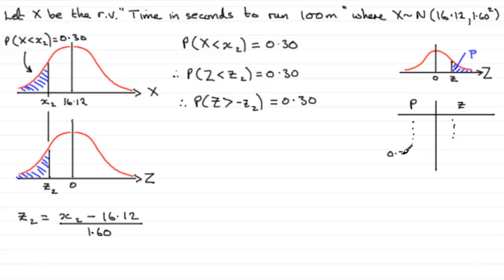You'll in fact see 0.3000 and against that you'll have 0.5244, let's just put that in, 0.5244. So that gives us our Z value for that. That will correspond to minus Z2.